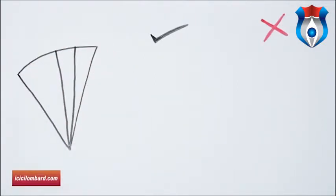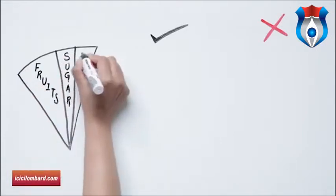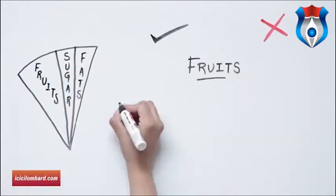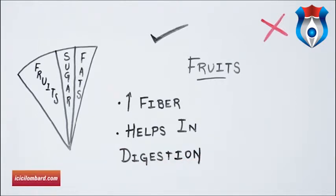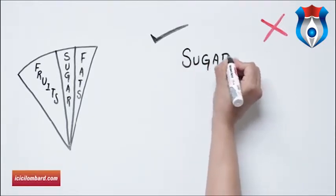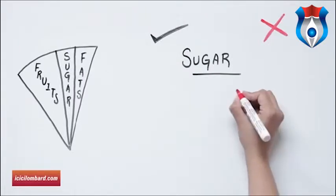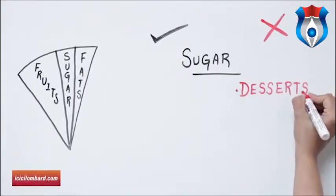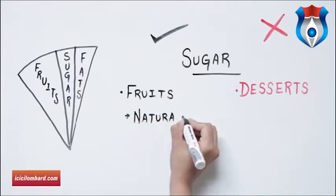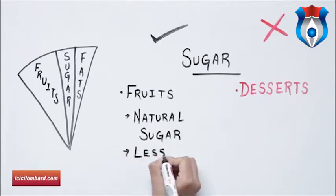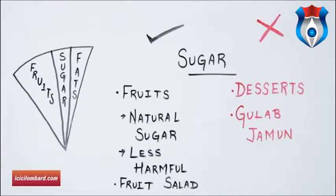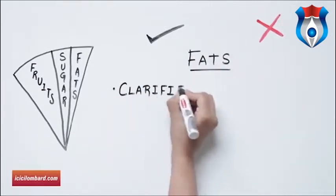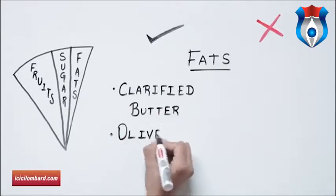When choosing fruits, select fruits high on fiber like oranges and apples — these help in digestion and keeping your system clean. It might be a good idea to replace sugar and dessert intake with fruits like mangoes and strawberries, as fruits have natural sugar which is much easier to digest and less harmful to your body. So next time you might want to have a fruit salad over gulab jamuns.